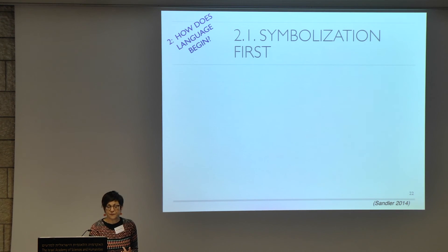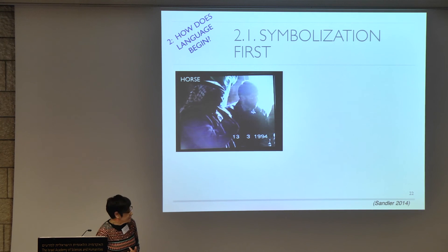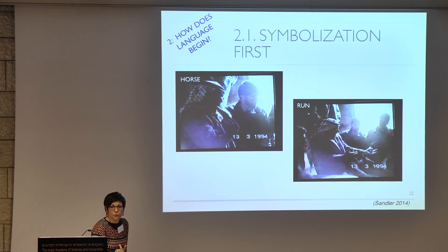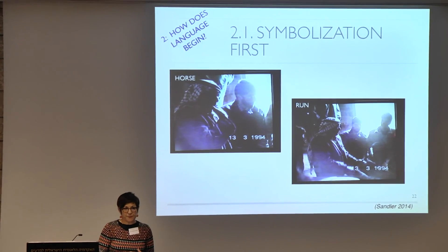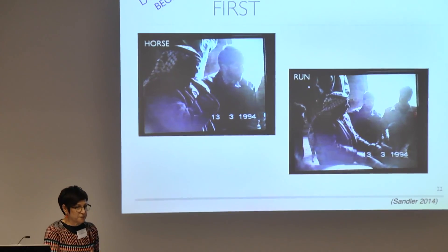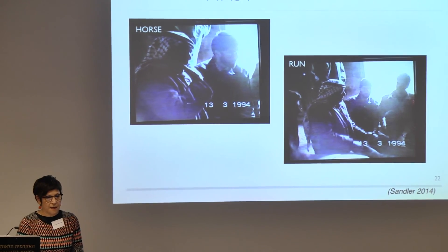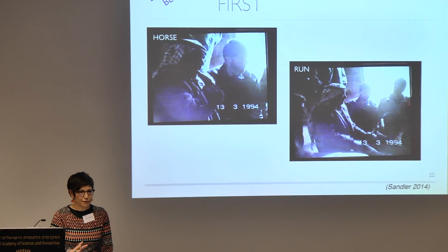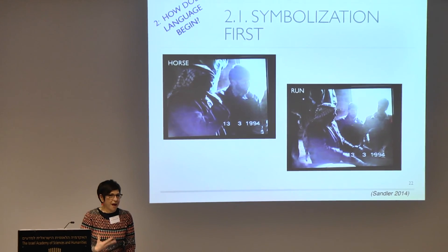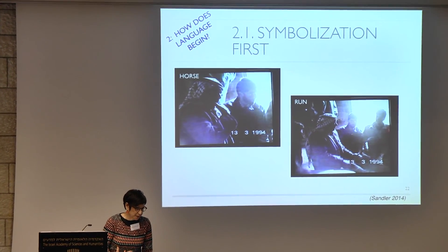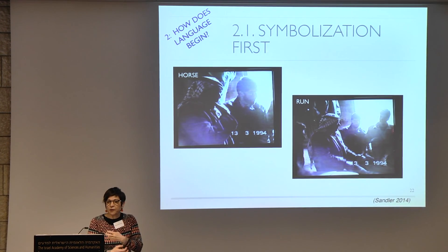Here are a couple of signs from the oldest signer — one of the first four deaf children, who had passed away by the time we got to the village, but someone had the presence of mind to videotape him. His signs include horse and run. Some of his earliest signs have stayed in the community. Symbolization is there first — that's the first thing that comes up. We have some kind of innate predisposition to symbolize, but the signs he used were apparently agreed upon within his family; the siblings negotiated a vocabulary.